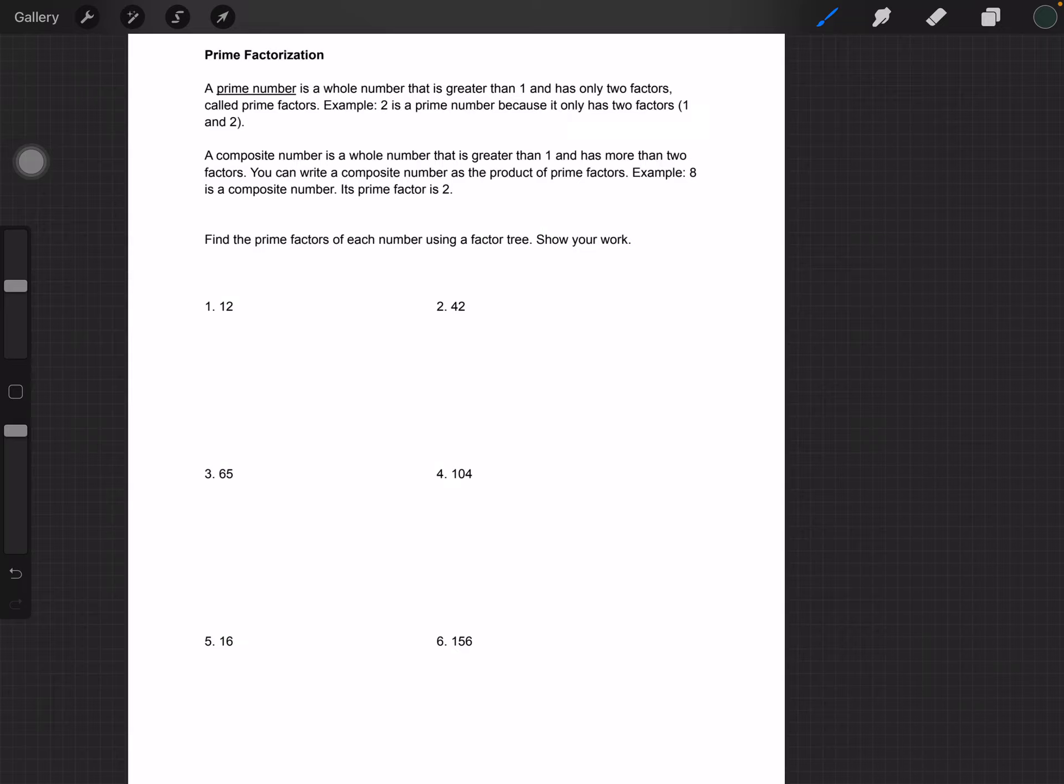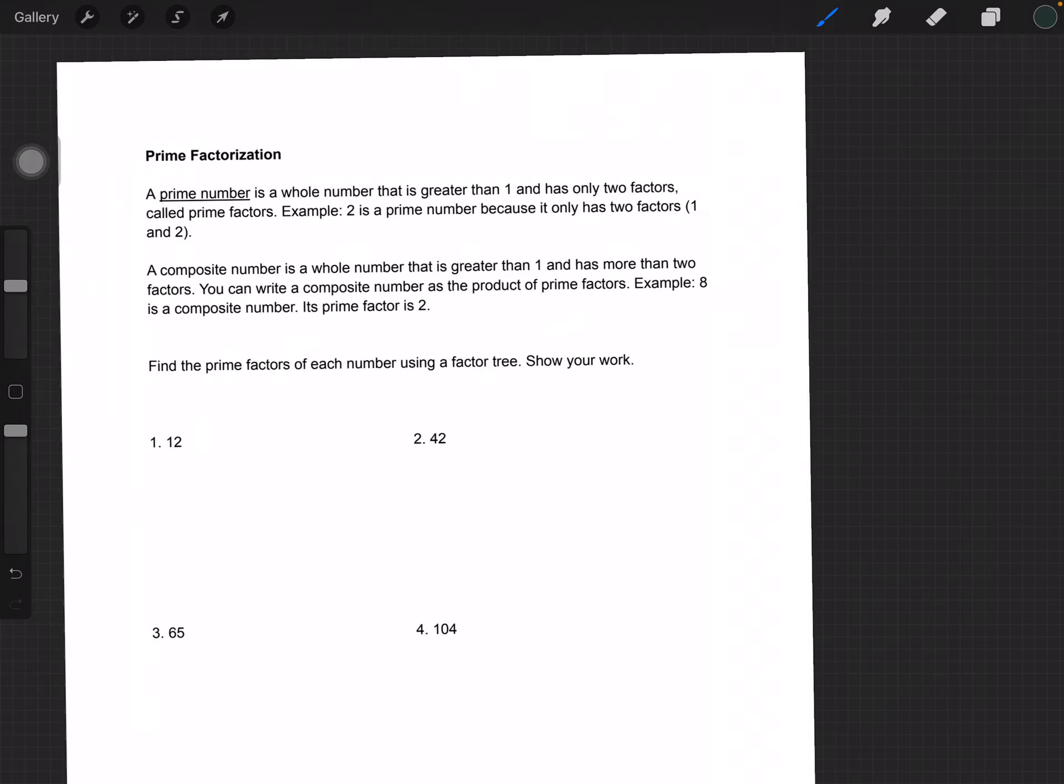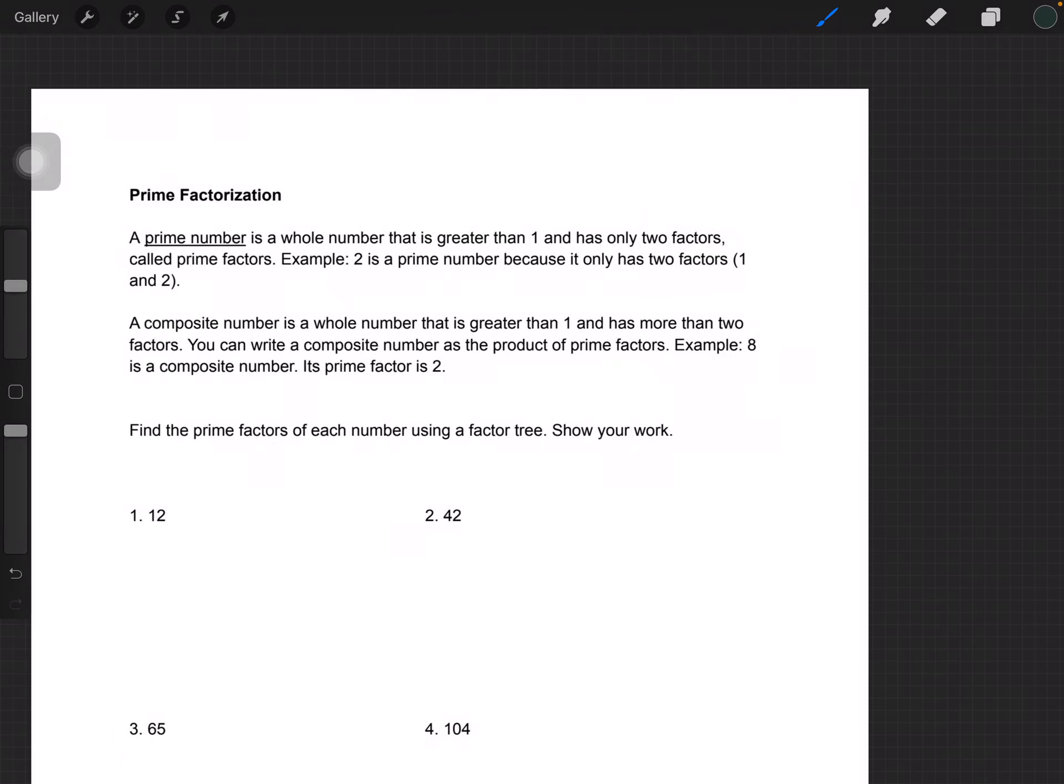Moving on, this page is a lesson on prime factorization. A prime number is a whole number that is greater than 1 and has only 2 factors called prime factors. Examples include 2, 3, and 5. A composite number is a whole number that is greater than 1 and has more than 2 factors.